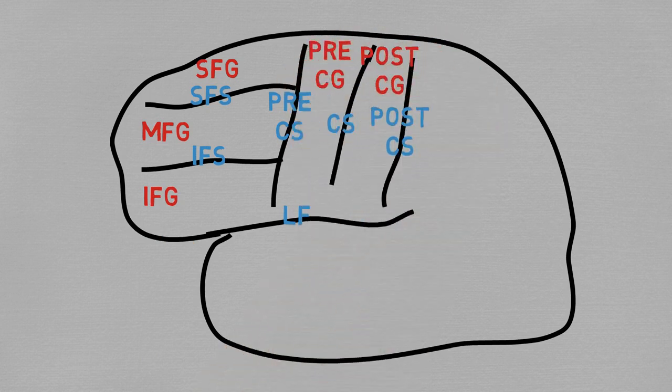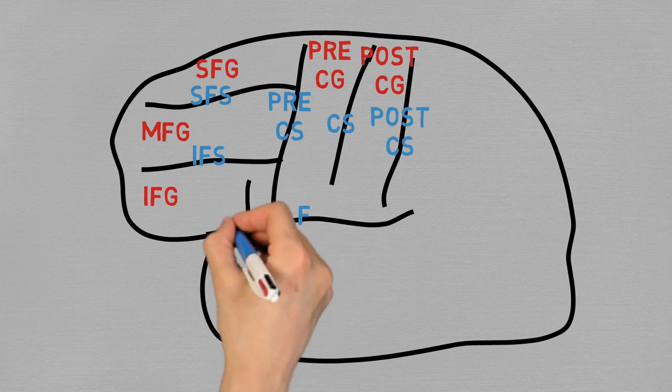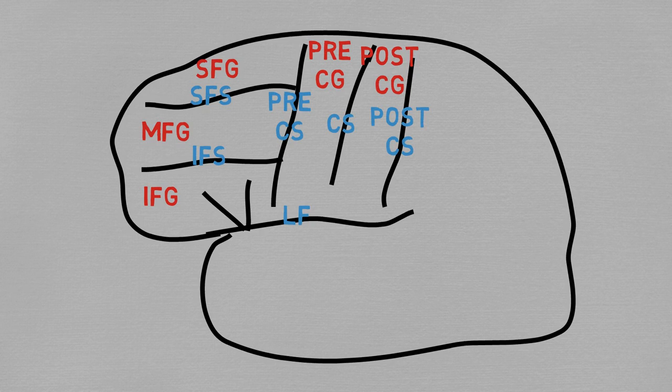And we need to add one more feature to the inferior frontal gyrus. There are the ascending and the anterior branches of the lateral fissure, that divide this area of the gyrus into the opercular, triangular and orbital parts of the inferior frontal gyrus.